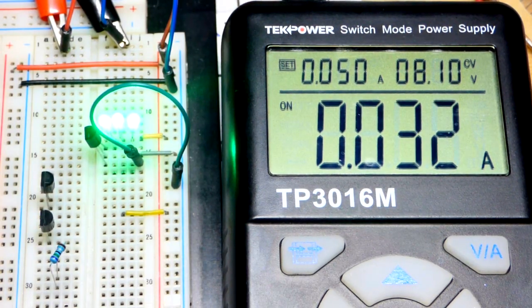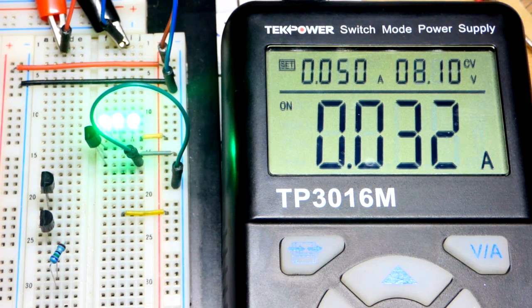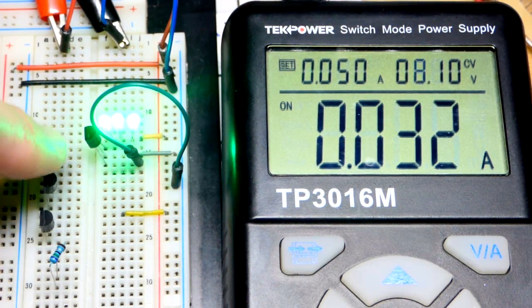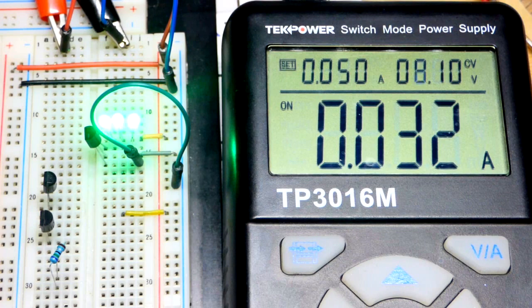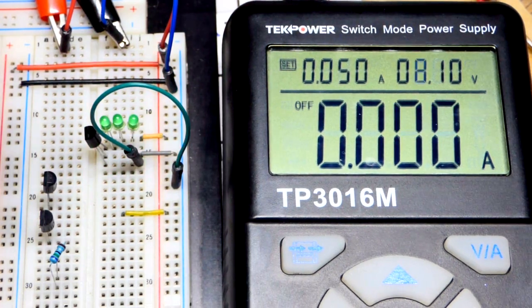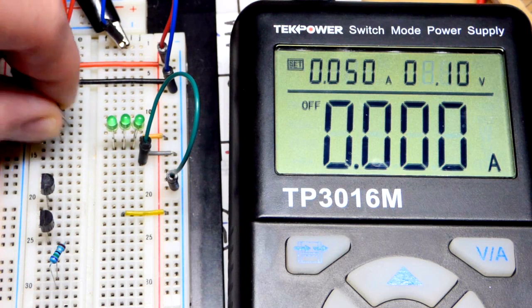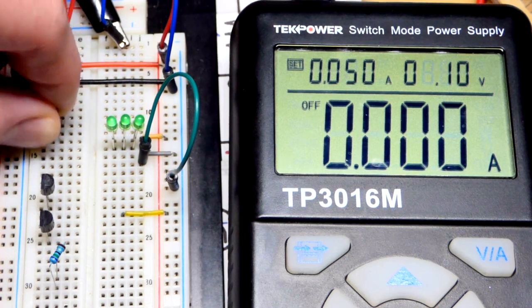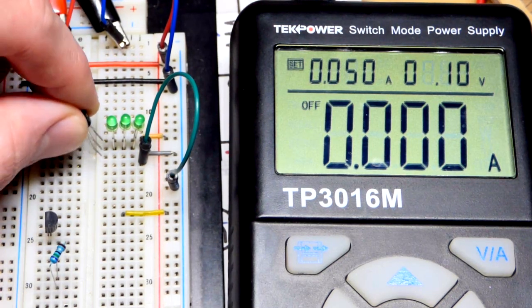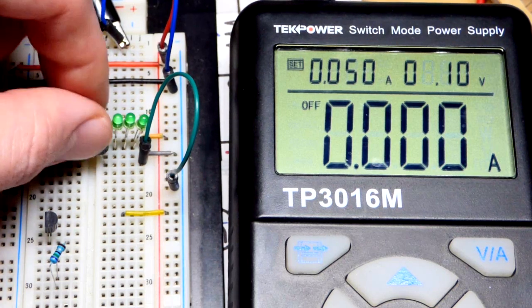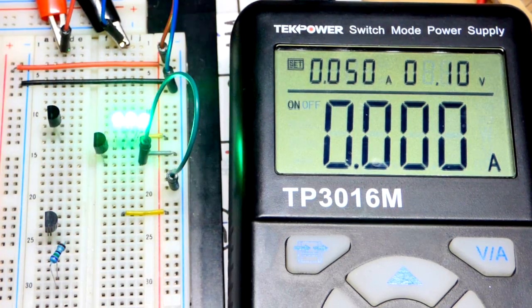So now the thing is that these transistors, even the same part number, may have a different current. But it's more unpredictable how much current they'll have if they're from different batches. So I'm assuming these are from the same batch. I'm going to swap that one out for this one. They're all the J310s.